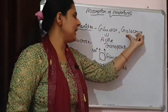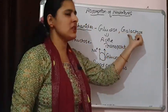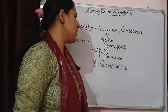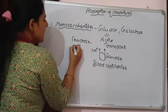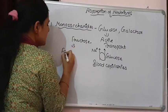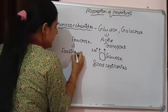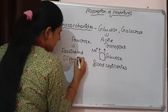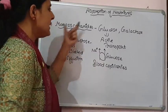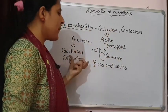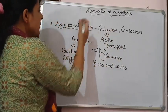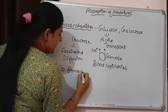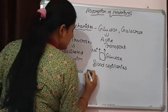Galactose is also sometimes absorbed by active transport, or it can take place by passive transport. Fructose, on the other hand, is absorbed with the help of facilitated diffusion. So all these monosaccharides are absorbed by different methods, and most of the absorption of monosaccharides takes place in the duodenum and jejunum region.